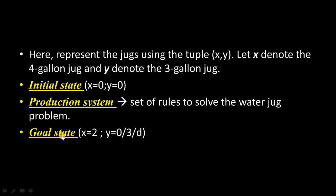The next point is the goal state, which means the final condition — when we can stop processing, meaning the problem is solved. The 4-gallon jug, denoted by variable x, should hold exactly the value 2. The value of y is not defined; it can be anything — empty, full, or any value. The main point is that x should have exactly 2 gallons of water. The next point we are discussing is the production system — the set of rules to solve the water jug problem.